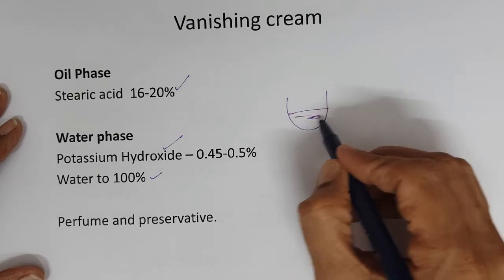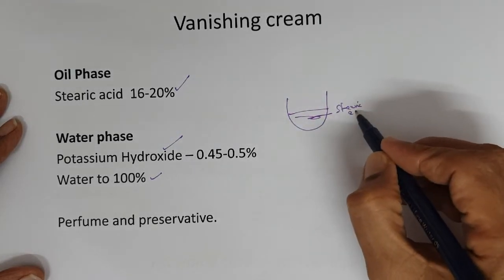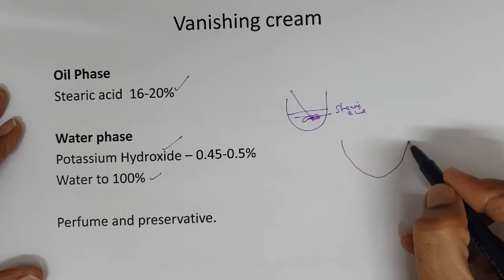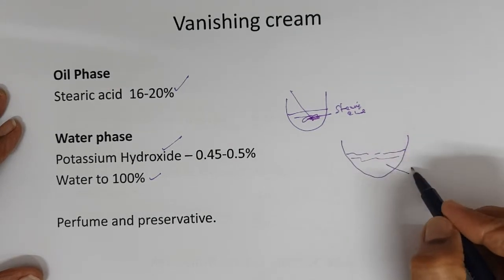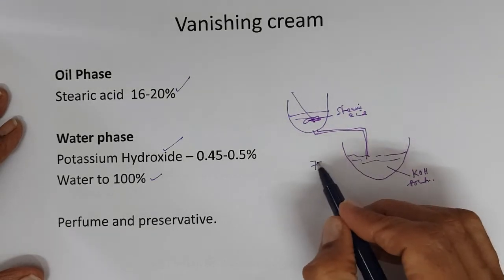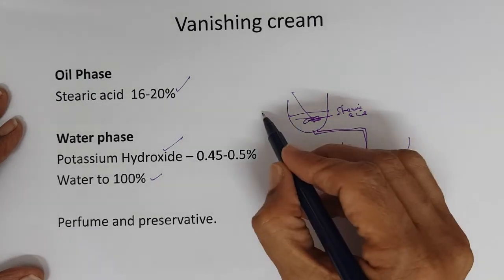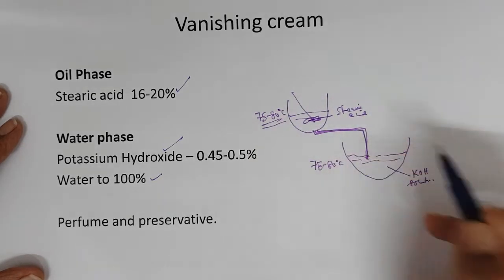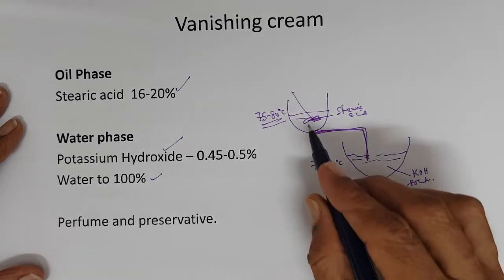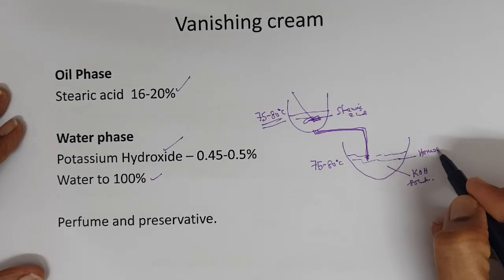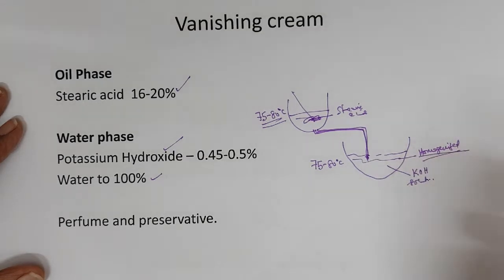Stearic acid is melted in the phase vessel. In the main kettle you have water, potassium hydroxide solution. Stearic acid added at 75 to 80 degree centigrade water phase. Oil phase added to water phase. As soon as all the oil phase added, mixed for some time and then homogenized.